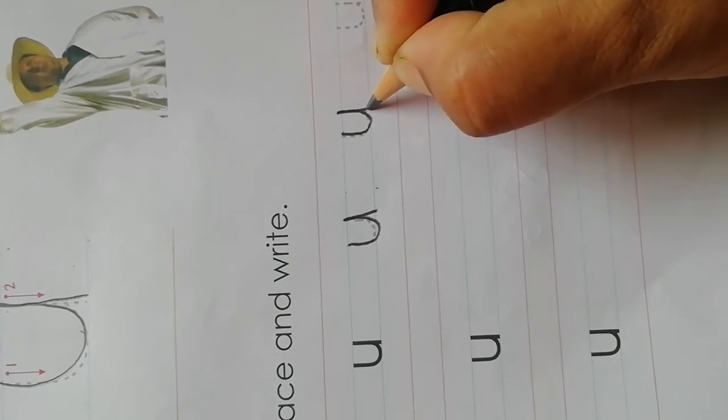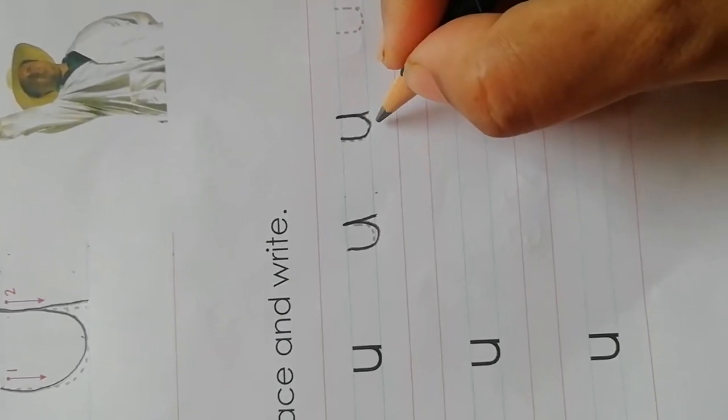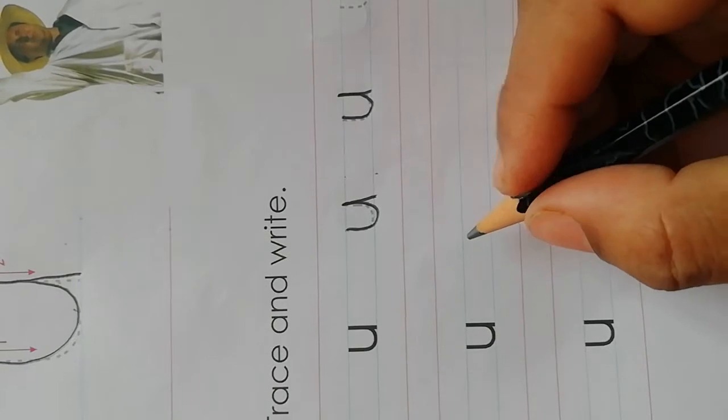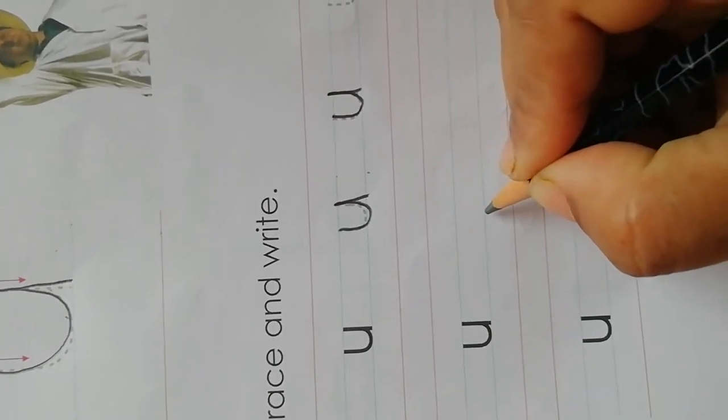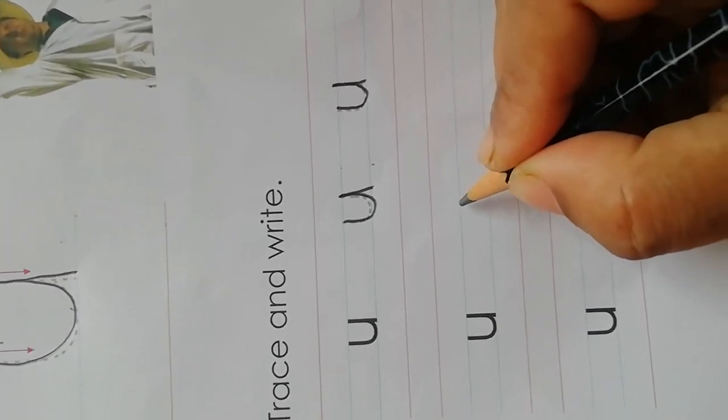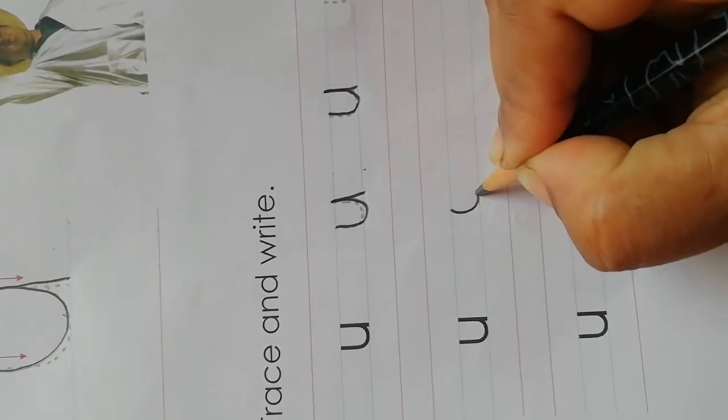Now how to write: between two blue lines, we have to write upward open curve, then standing line. Small letter u.